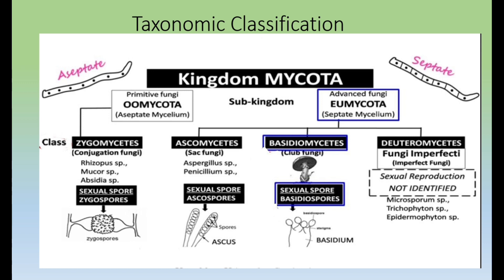The second sub-kingdom, Eumycota, contains fungi with septate mycelium and is also known as advanced fungi. This sub-kingdom has three classes: class one Ascomycetes, class two Basidiomycetes, and class three Deuteromycetes.